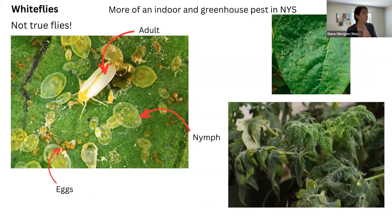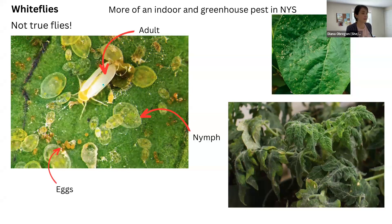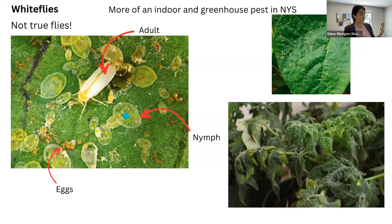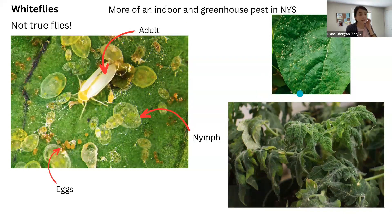Whiteflies are not true flies — people call them whiteflies, but they're not flies. They also like to live underneath the leaves. The adult is white and has a triangular shape when viewed from the front. The nymphs are quite real-looking — sometimes you just have nymphs, and you might think it's a seed or a fungus, but they're actually insects. Here you can see the eggs and adults, and these pictures show some of the damage they cause: malformation of the leaves and also some mold.